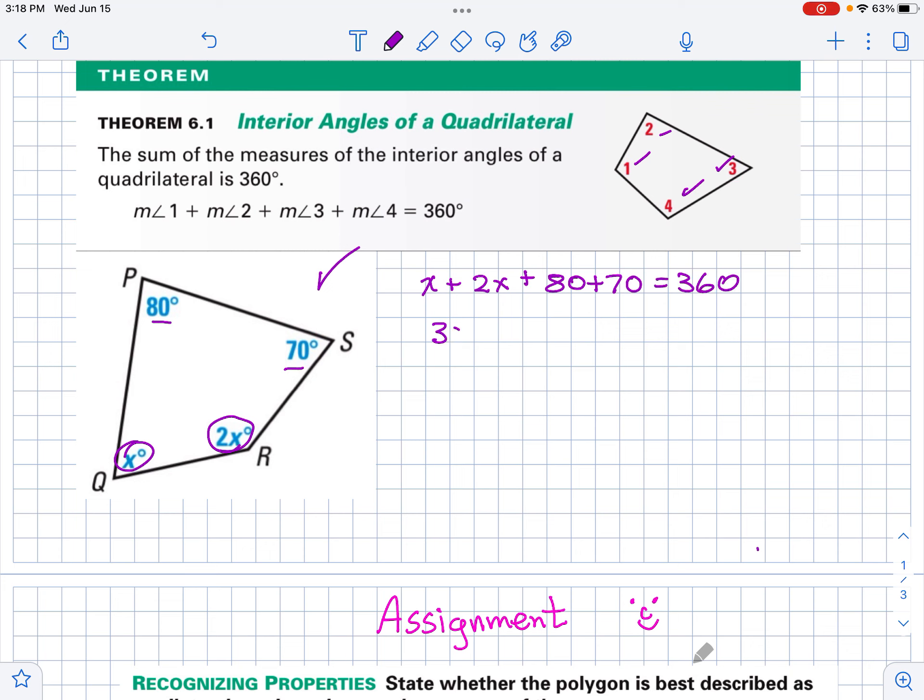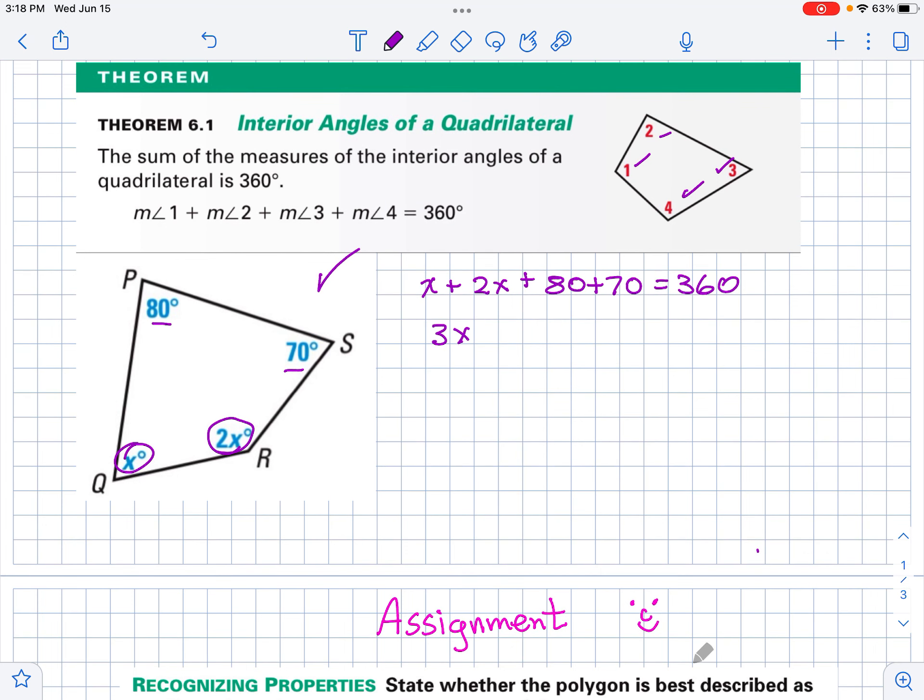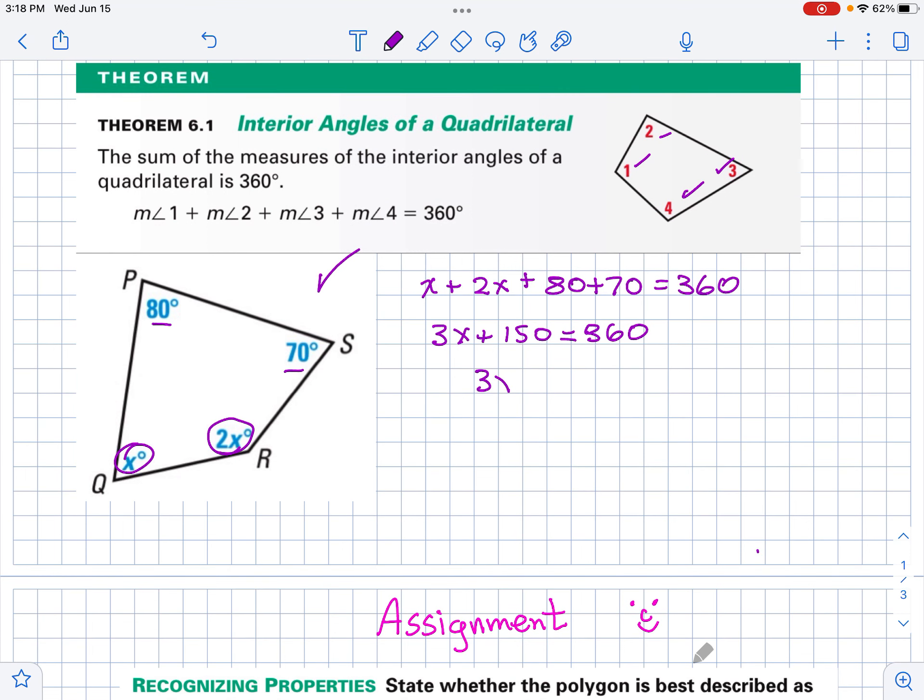Well, let's see what this is. This is 3x plus 150 equals 360. Then that means that 3x equals 360 minus 150, that would be 210. And that would be x equals 70, if we divide. So, x equals 70.